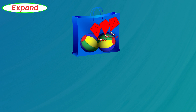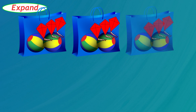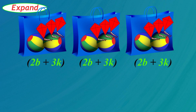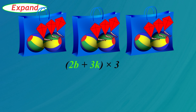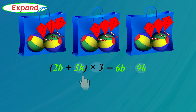A carnival gives away show bags. Each show bag has two balls and three kites. What's in three bags? That's 2B plus 3K in parentheses, all multiplied by 3. 2B times 3 is 6B and 3K times 3 is 9K. Altogether that's six balls and nine kites.